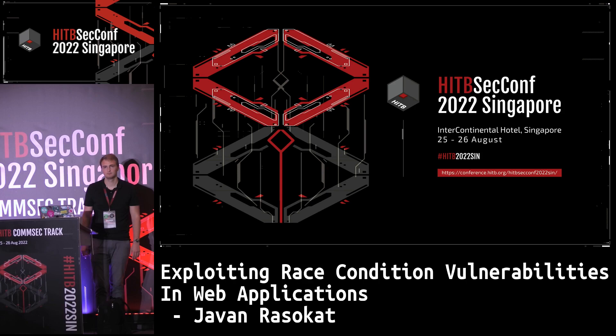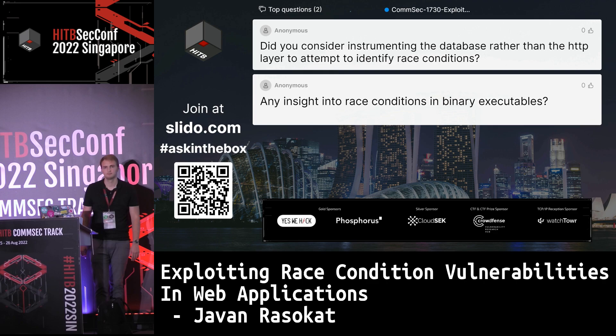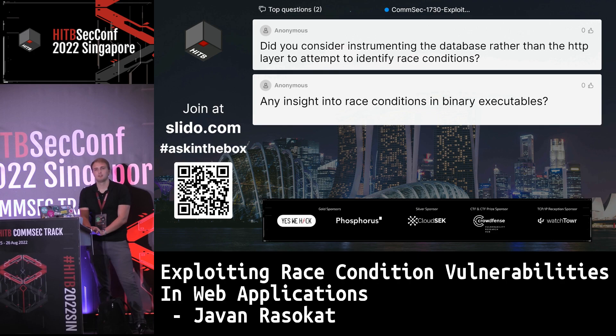Question: Did you try race conditions against different backend technologies — different databases, NoSQL, etc. — to see if some are more robust because they respond faster or have auto-locking? I haven't compared different backend technologies. I just did this with the demo application using default settings — MariaDB, PHP, and so on. But I think there are some database concepts like atomic operations that might not be vulnerable — I can't name specific ones though.